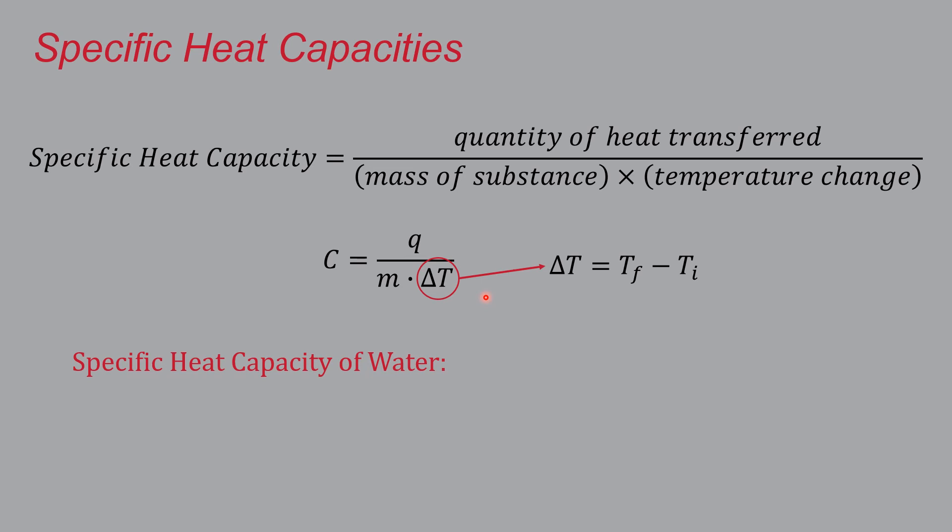So let's talk about the specific heat capacity of water based on the numbers that I gave you, which are not made up. So I told you that it takes 4.184 joules of energy to raise one gram of water by one degree Celsius. And that gives us a heat capacity of 4.184 joules per gram per degree Celsius. Note the units, they are important and you need to keep them straight. Now, I would like to put that into perspective.